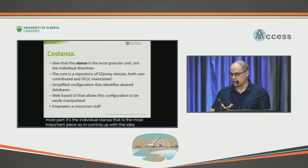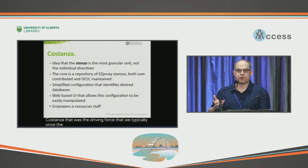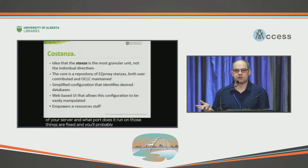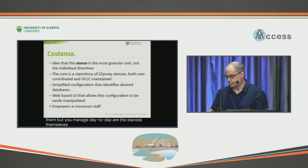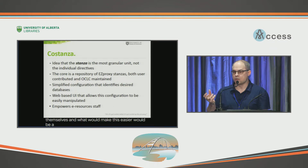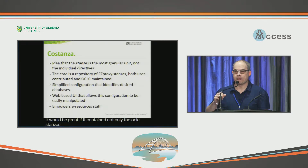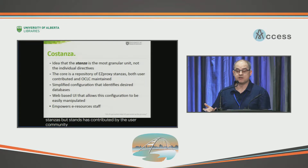In coming up with the idea of Costanza, that was the driving force — once the system is up and running, you don't really need to manage the directives like what's the name of your server and what port does it run on. Those things are fixed and you'll probably never change them. What you manage day to day are the stanzas themselves. And what would make this easier would be a core repository of those EasyProxy stanzas — containing not only the OCLC stanzas, but stanzas contributed by the user community of EasyProxy.